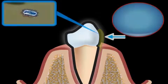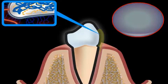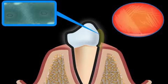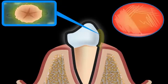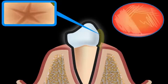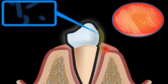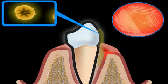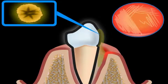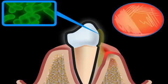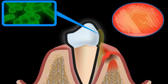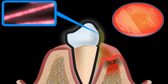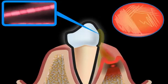Not only do plaque and bacteria initiate caries, but they also cause inflammation of the periodontal apparatus — in effect the periodontium. First, inflammation of the gingiva and a gingival pocket develop. If plaque and bacteria are not effectively removed, then this inflammation leads to loss of bone, and bone pockets can develop also.